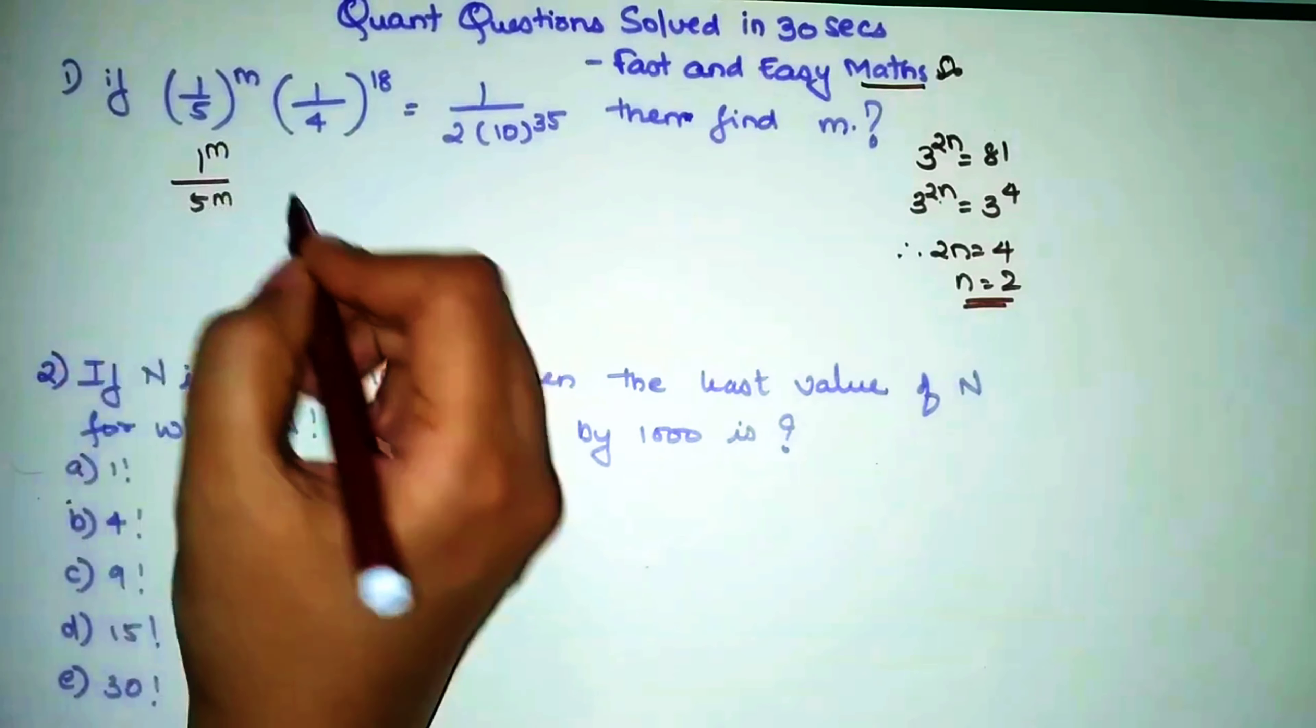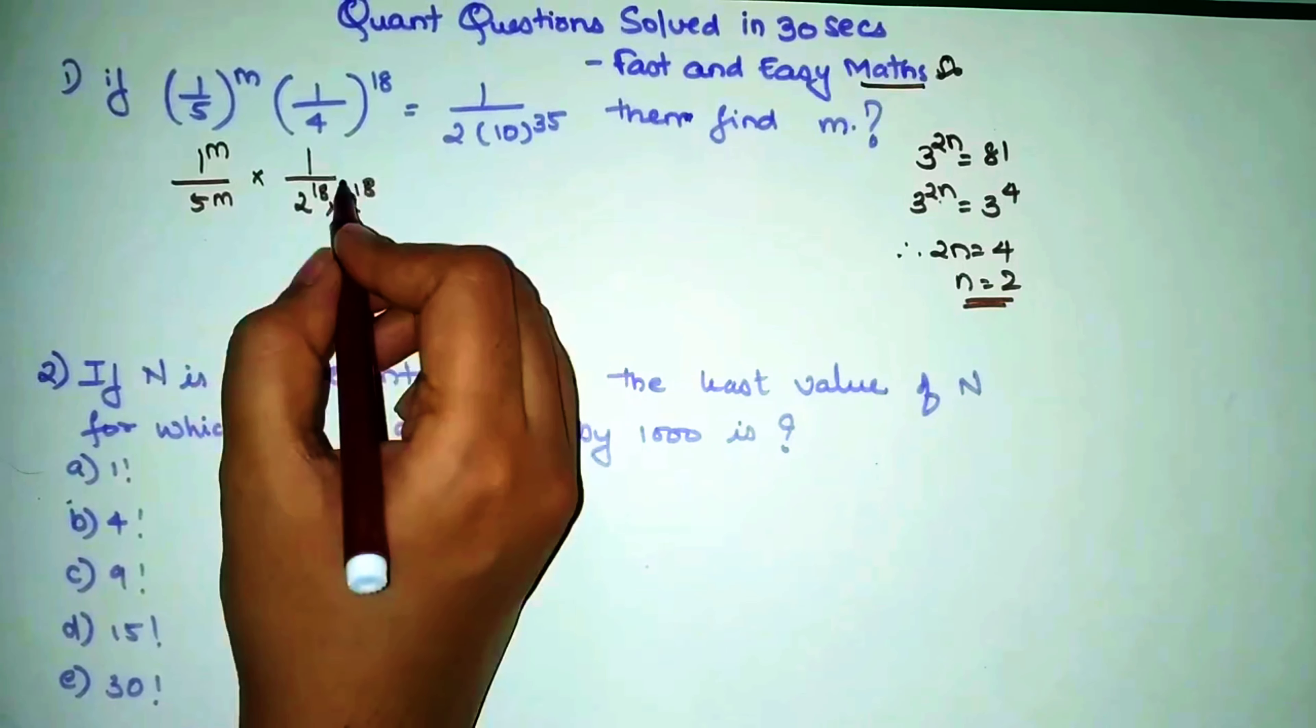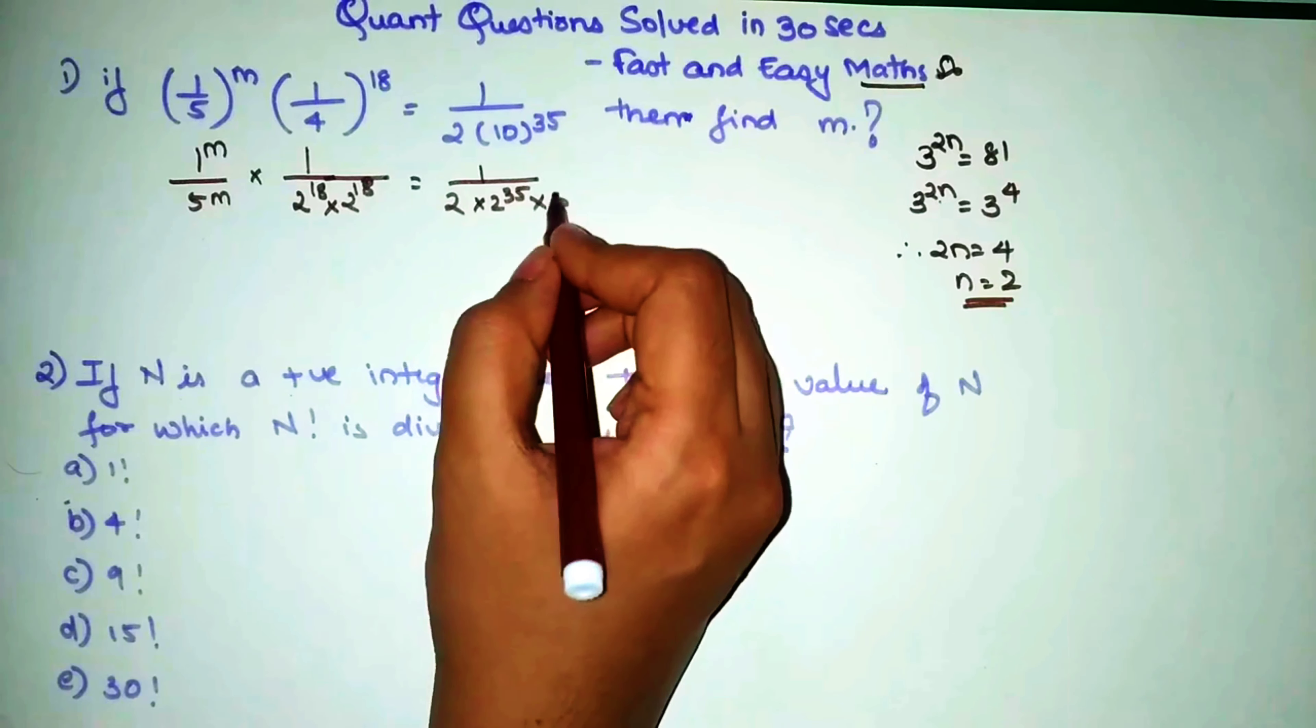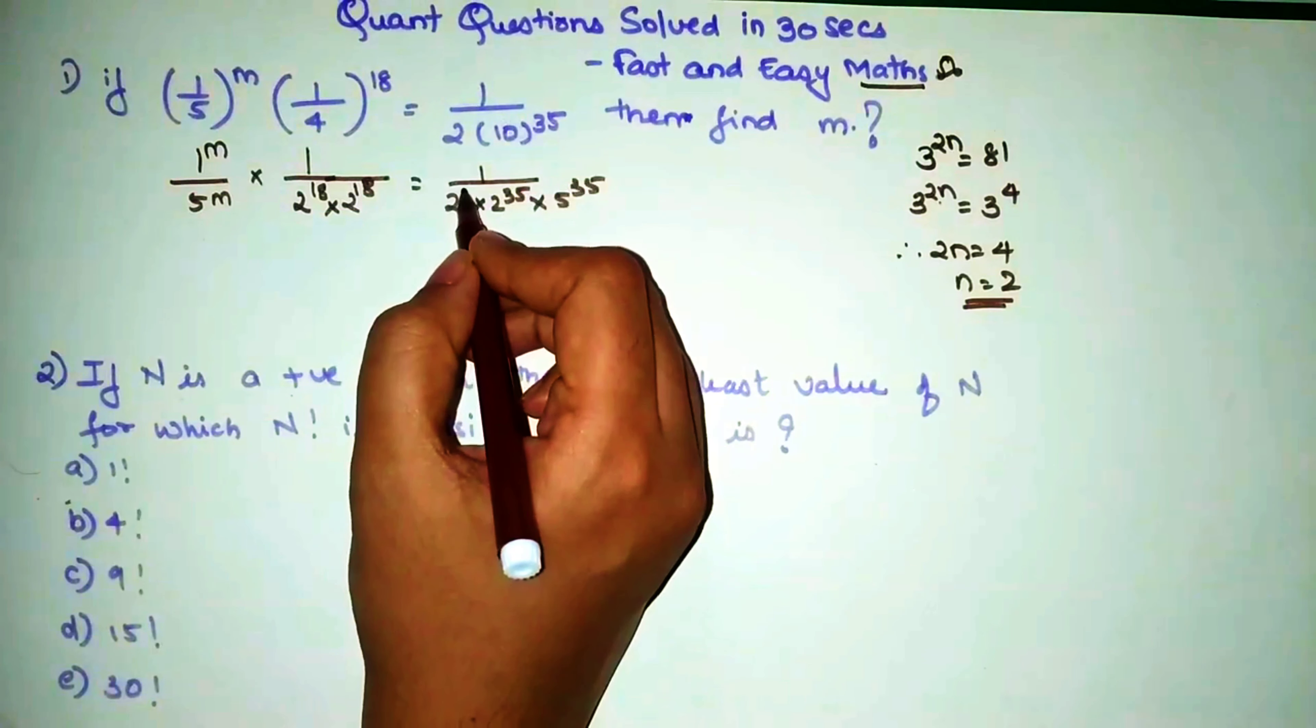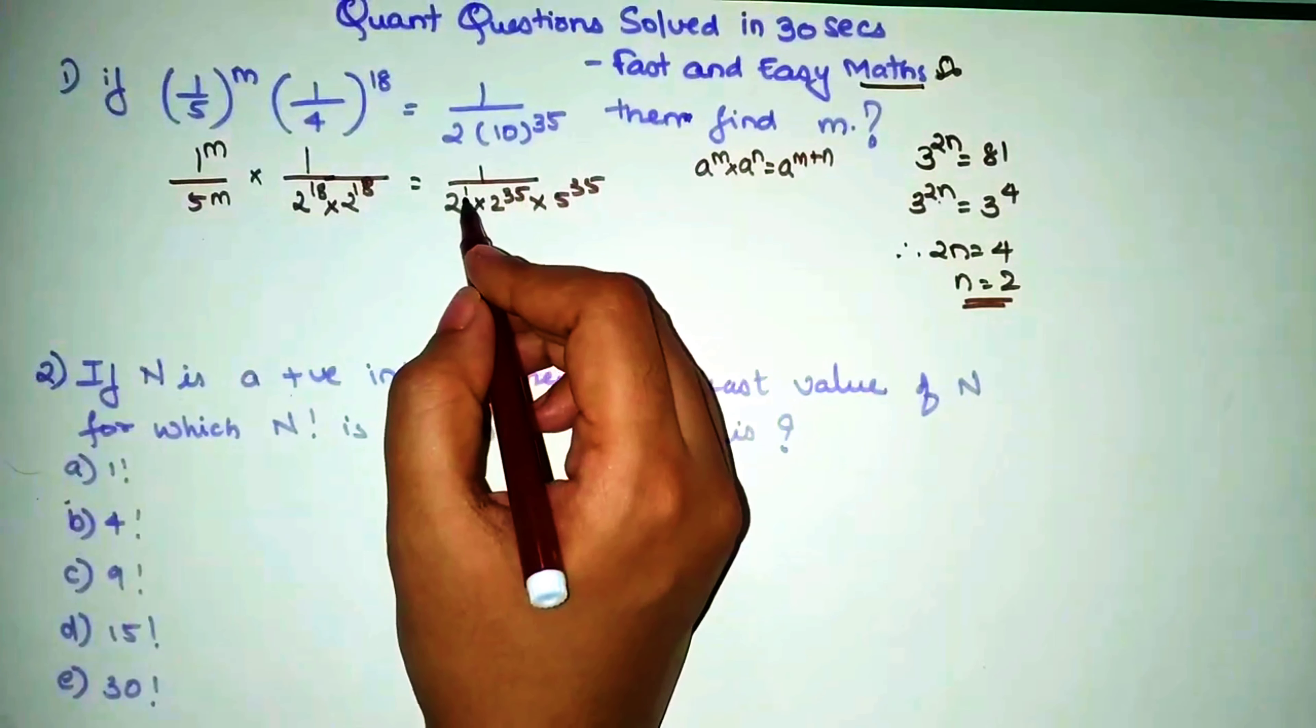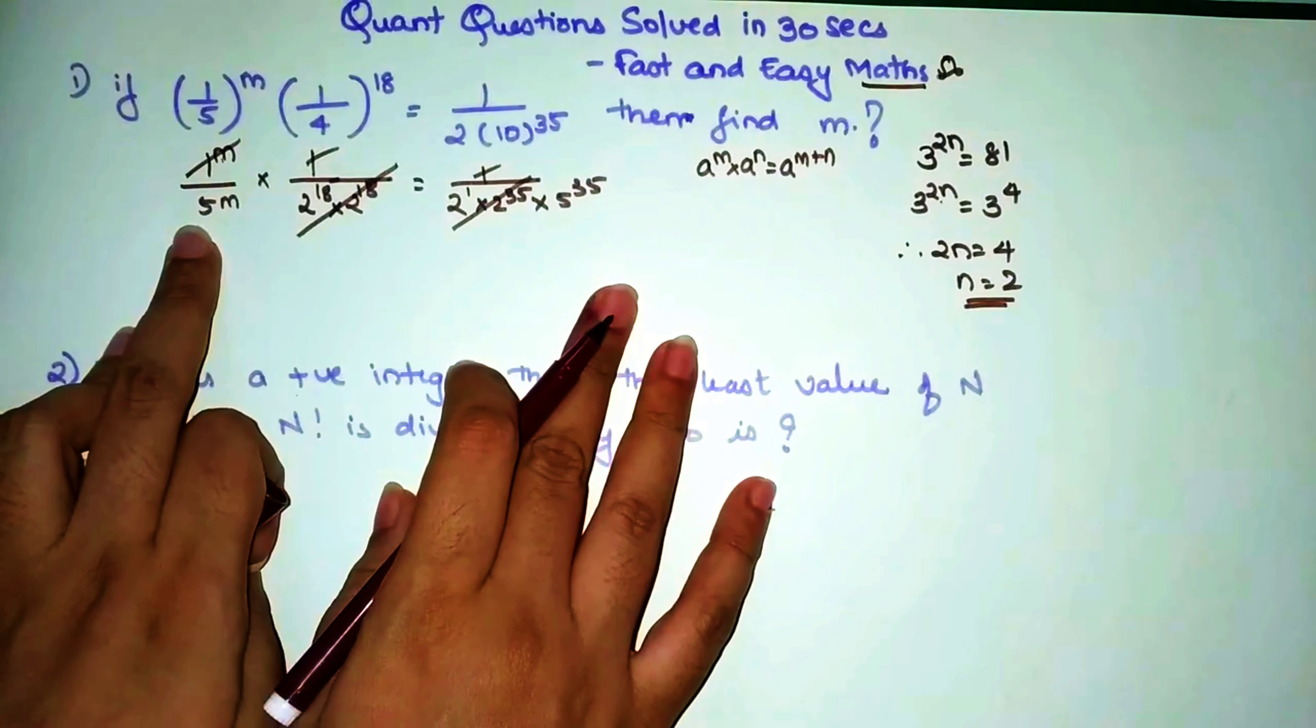This particular knowledge has to be important for solving this sum. Now this is 1/5 raised to m, so I can write this as 1 raised to m upon 5 raised to m times... can I write this as 2 raised to 18 times 2 raised to 18? Because 4 is nothing but 2 raised to 2 times 2, correct. Is equal to 1 upon 2... let's write this in terms of its prime factors. So we know it is 2 raised to 35 times 5 raised to 35. So this is 2 raised to 1 and 2 raised to 35, so that becomes, according to law of indices, 2 raised to 36.